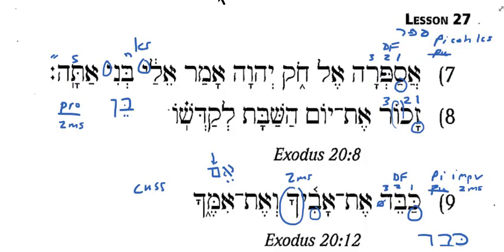So look at our form — I have a Qal infinitive absolute. This is one of those situations where the infinitive absolute does not accompany a main verb, so it's not being used to emphasize a main verb, and it's not being used as a complementary infinitive absolute. What it's doing is functioning like a main verb — here it's functioning like an imperative. This is going to be translated as if it were an imperative: 'Remember the day of the Sabbath,' which is to say, 'Remember the Sabbath day.'